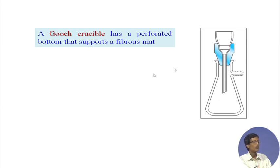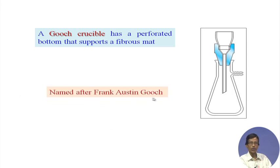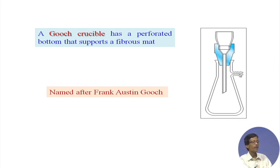That crucible is named after Frank Austin Gooch. The Gooch crucible setup involves a filtering flask with a pipe adapter and rubber tubing attached, which can be connected to a water suction tap or pump so that you can have suction through it.